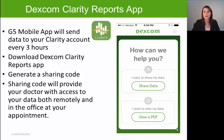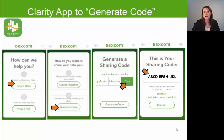The home screen of the Clarity Report app provides two options: 'Share Data' and 'View a PDF.' If you select 'View a PDF,' it will generate a PDF report with graphs and charts from Clarity on your phone, defaulting to the most recent 14 days of glucose information. If you select 'Share Data,' it provides two options for sharing your glucose information with your physician — let's talk about 'Generate Code' first.